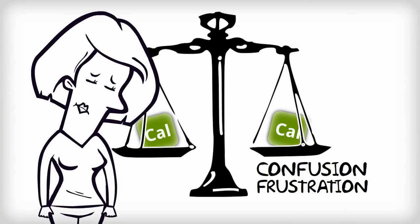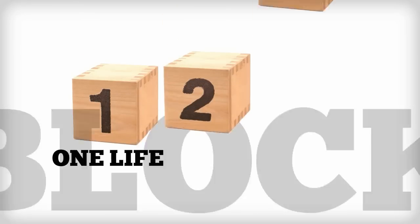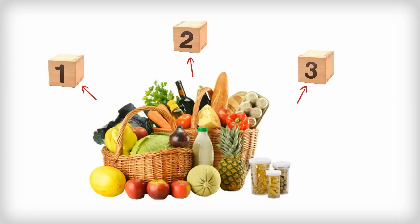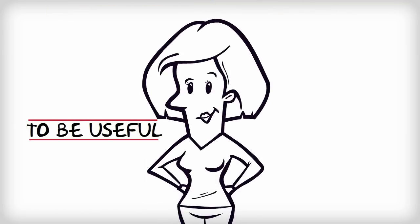The One Life block system is different. Each food is assigned a block count based on the food's ability to satisfy hunger and to keep you full. But to be useful, it has to be simple.